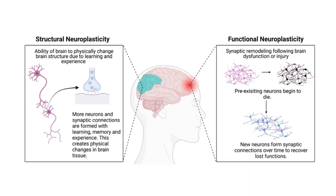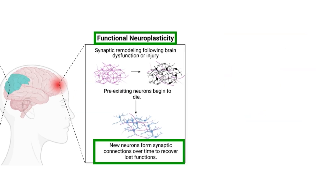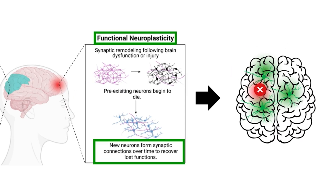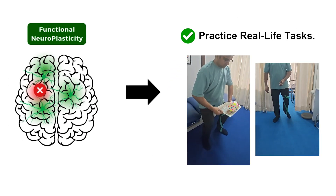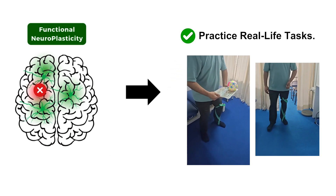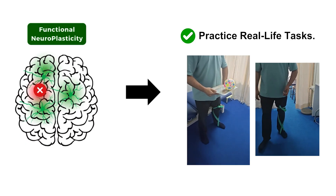Neuroplasticity is the brain's amazing ability to change, adapt, and form new connections after injury. In the brain, this happens in two types: structural and functional neuroplasticity. The functional type is important in stroke patients. In this type, the surrounding brain areas, or even the opposite hemisphere, can take over if the right training is given. MRP is built on this concept.